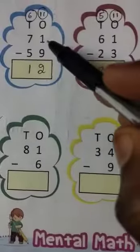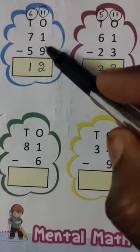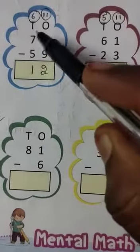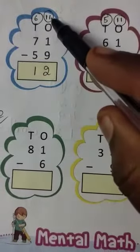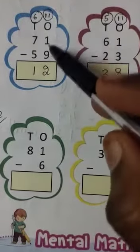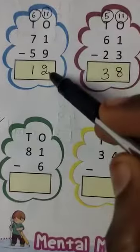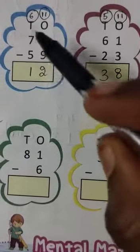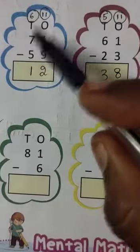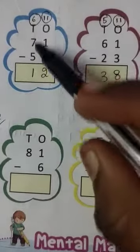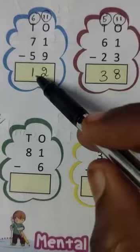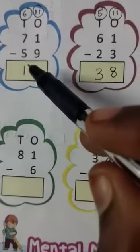First problem. In the ones place, 9 minus 7 — since we can't subtract, we borrow. 7 becomes 11 after borrowing, so 11 minus 9 is 2. In the tens place, 7 becomes 6 after borrowing; 6 minus 5 is 1. So the answer is 12.